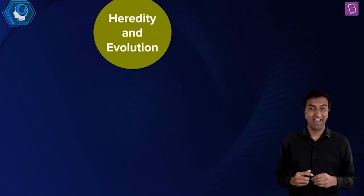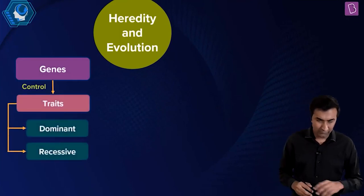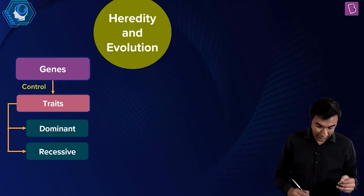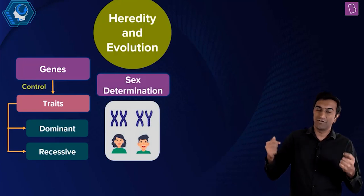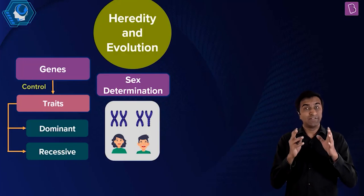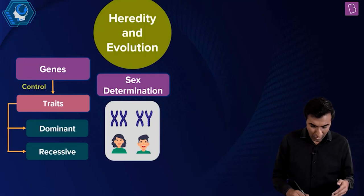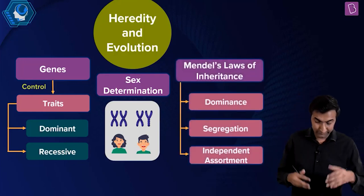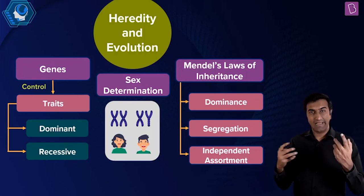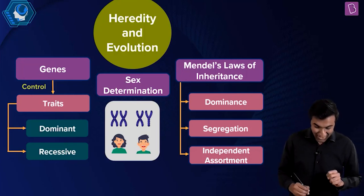Lastly, heredity and evolution: genes are literally what makes you you. Some traits are dominant and some are recessive — recessive means they may skip a generation. Sex determination happens through chromosomes: women have XX and men have XY, and the baby gets its sex based on these chromosomes. You also have Mendel's laws of inheritance — the ideas of colors of eyes and so on.